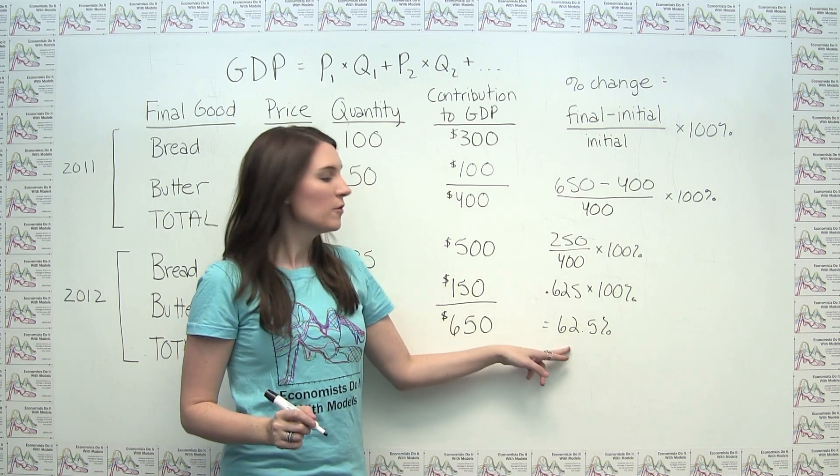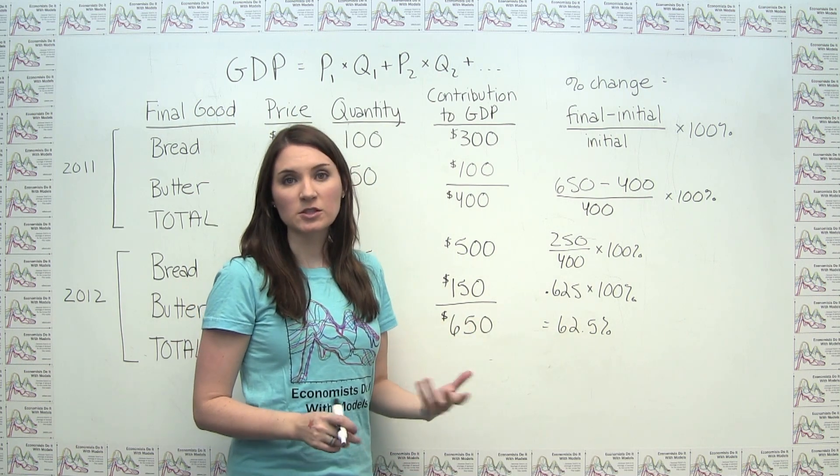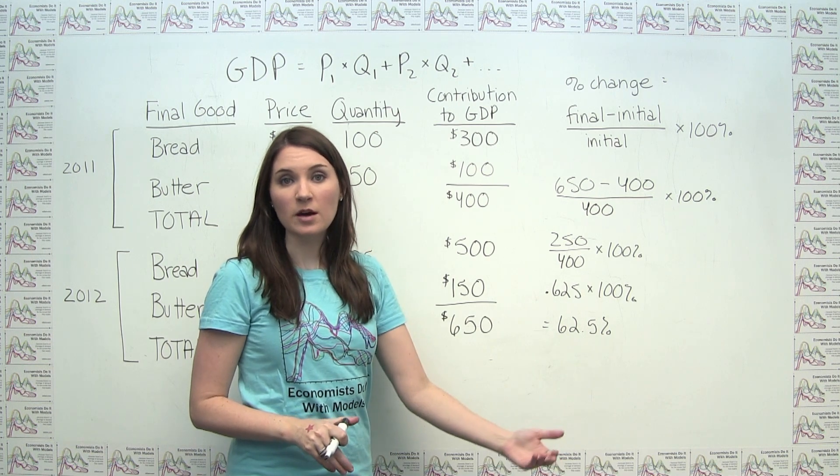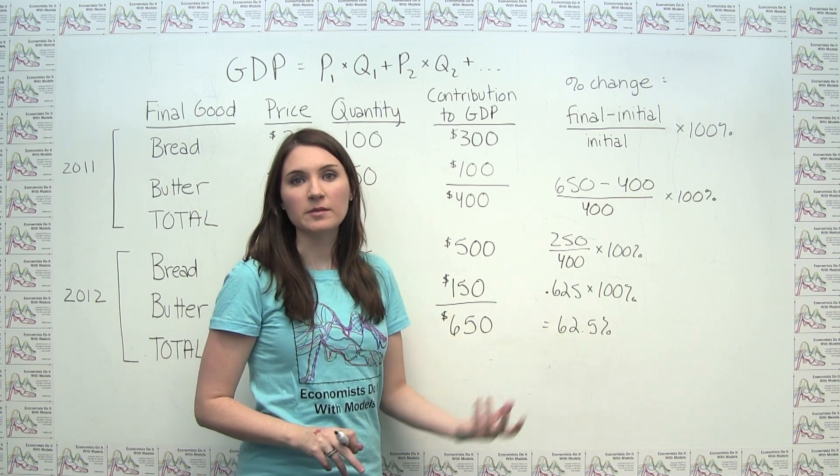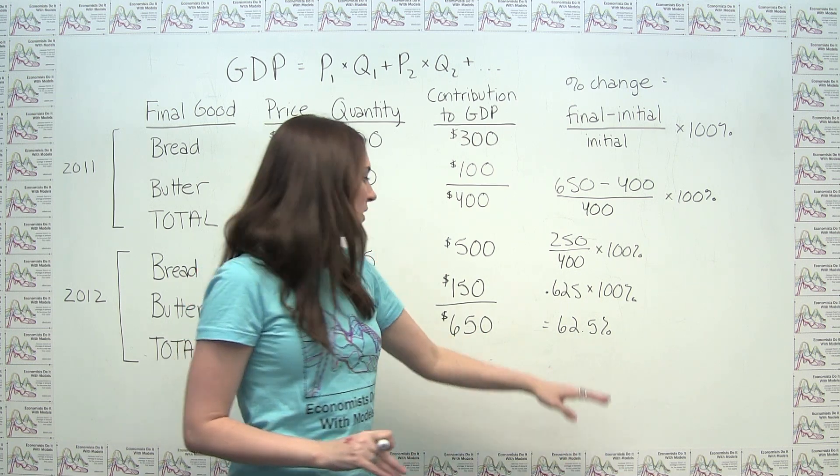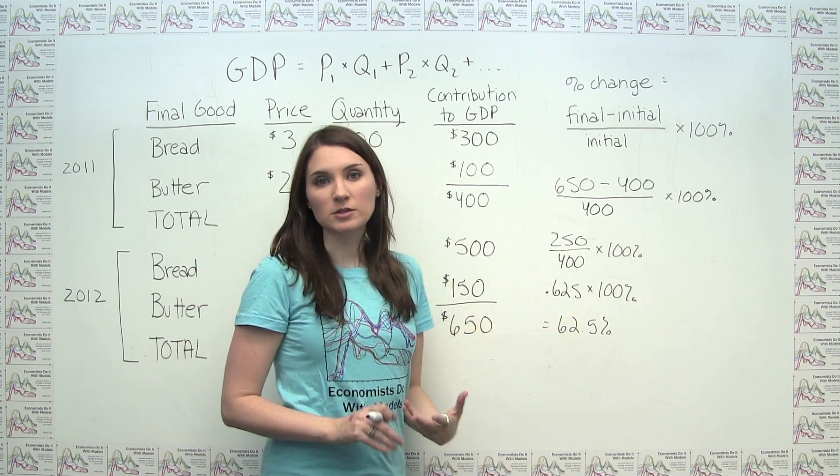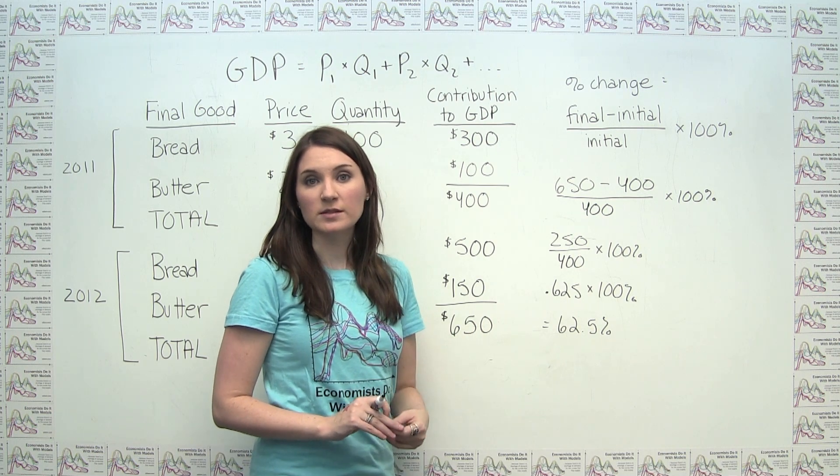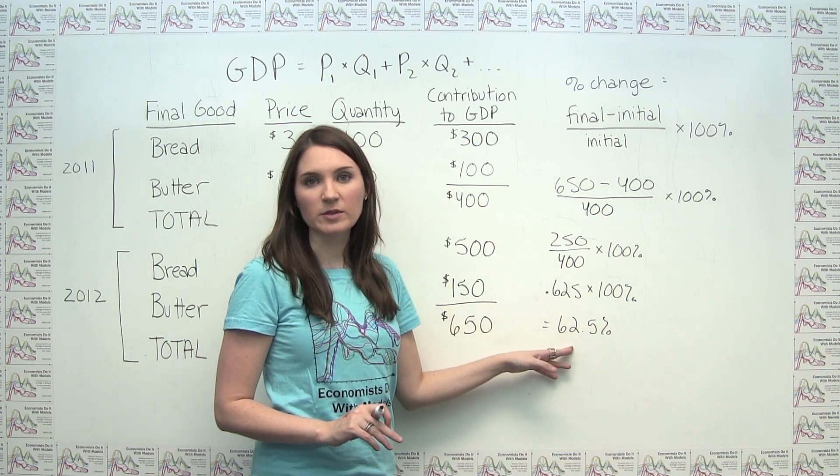So we can say that the percentage change in GDP from 2011 to 2012 in our very small economy is 62.5%. Or more specifically, as we'll see later, the change in nominal GDP from 2011 to 2012 is 62.5%.